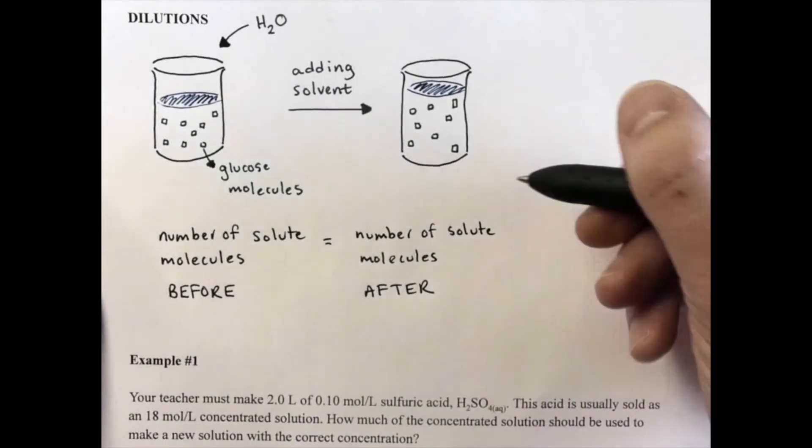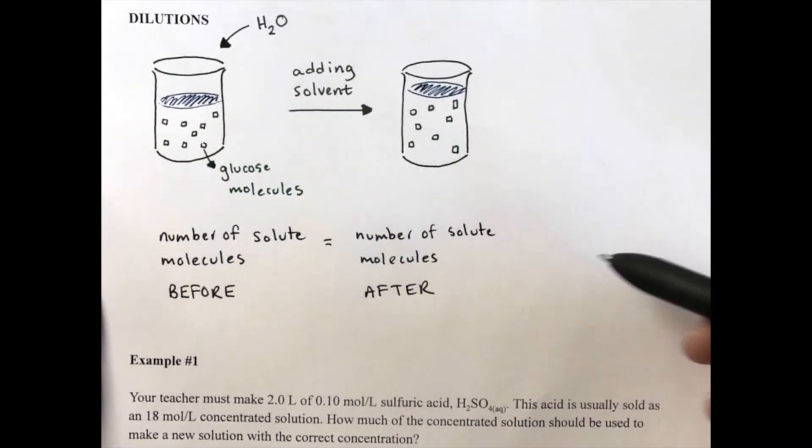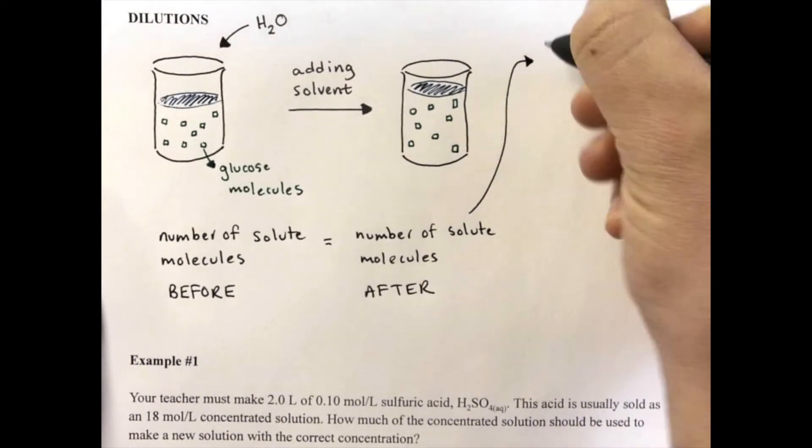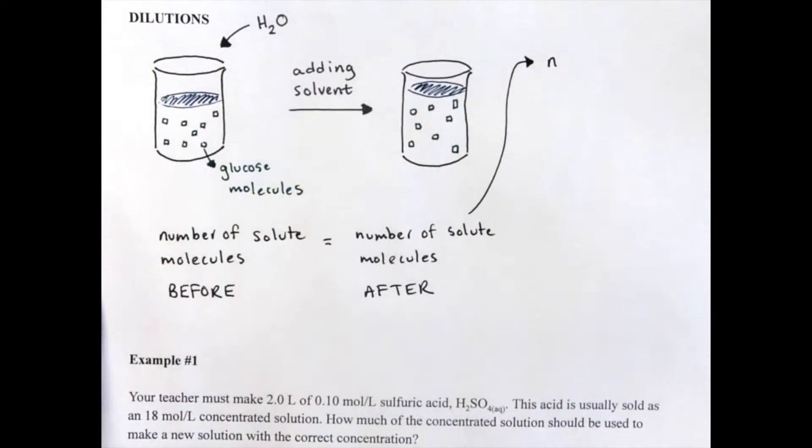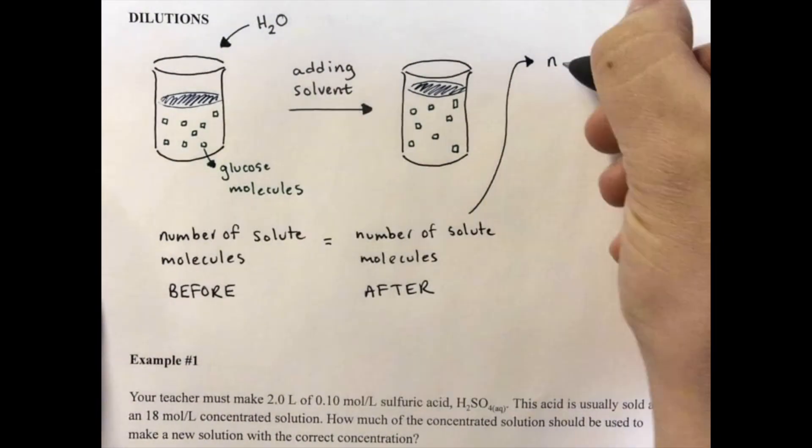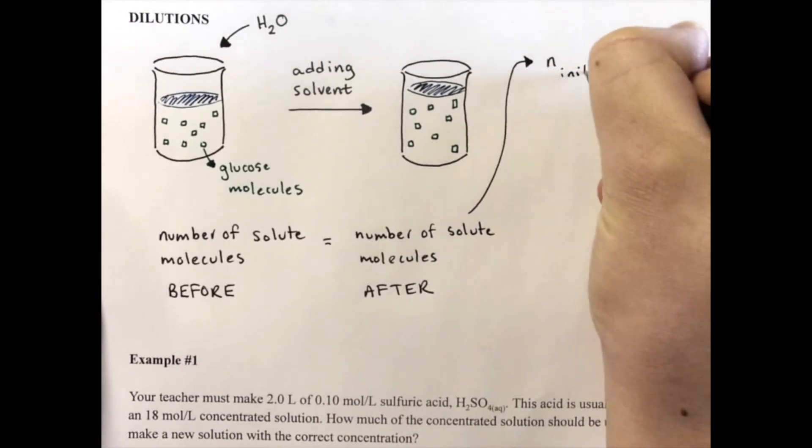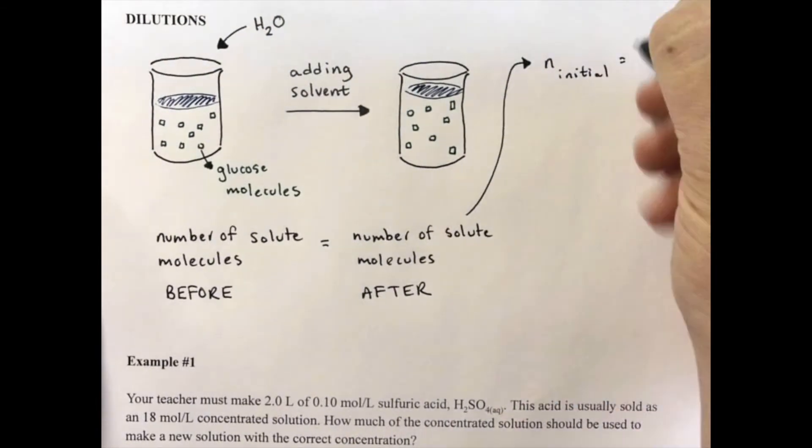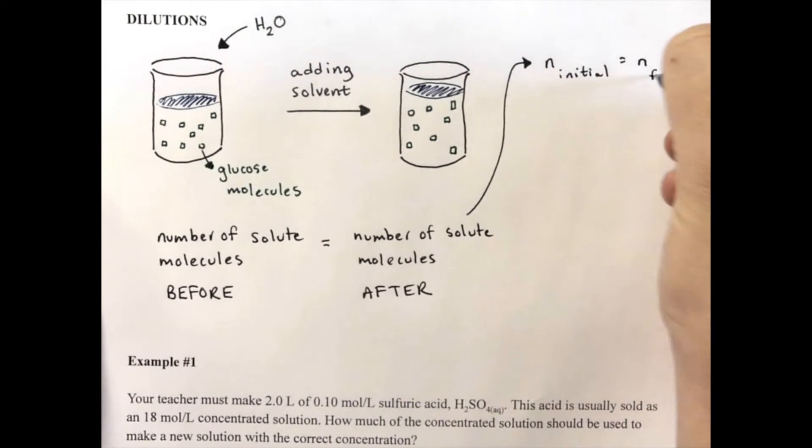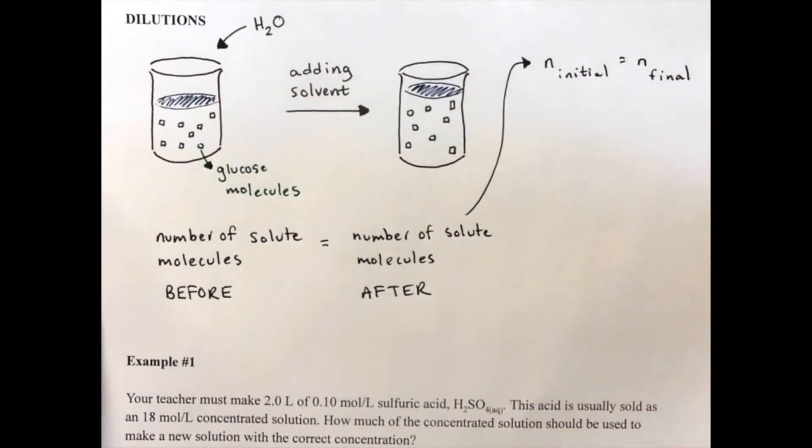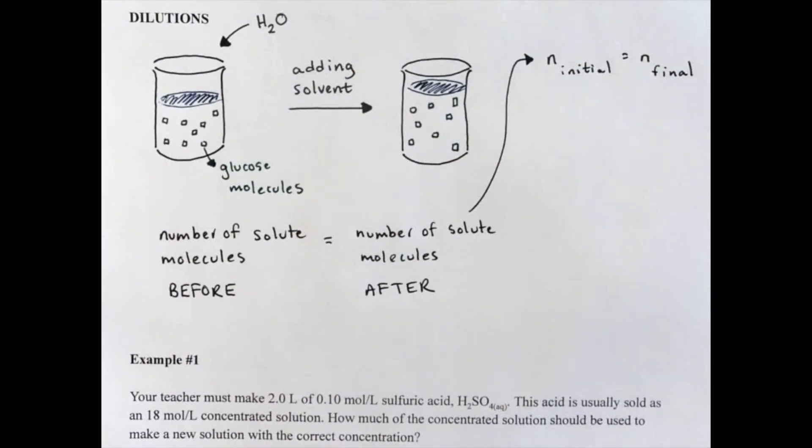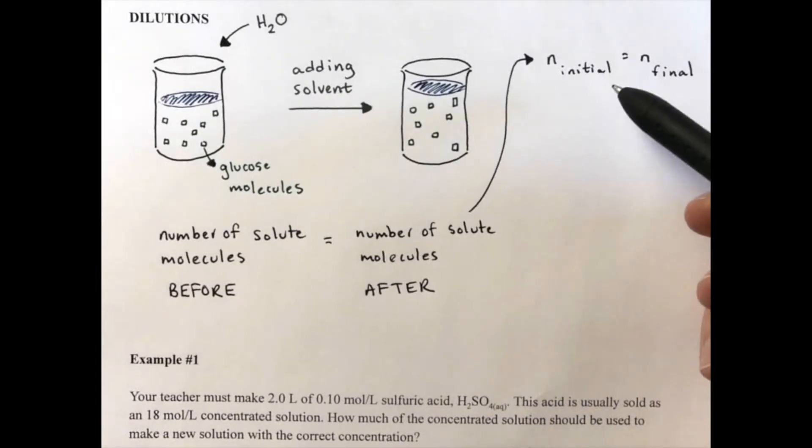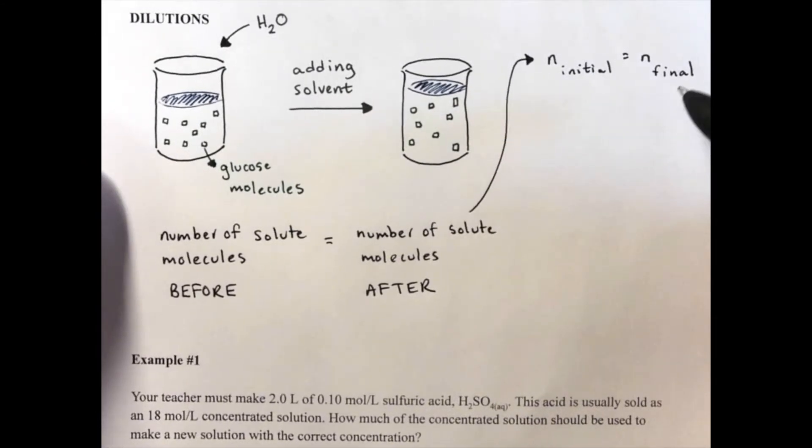Okay, so instead of using numbers of solute molecules before and after, instead what we're going to think through is number of moles, which I'm going to represent with the little letter n. And I'll just state it like this: the initial number of moles has to equal the final number of moles. So those number of moles aren't changing, and this is for the solute. The number of moles of solute initially equals the number of moles of solute afterward.